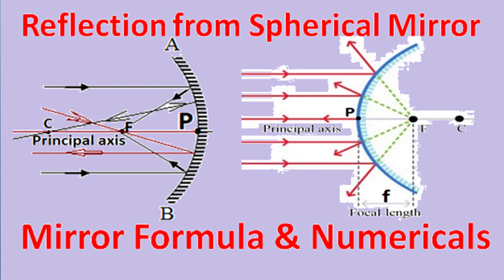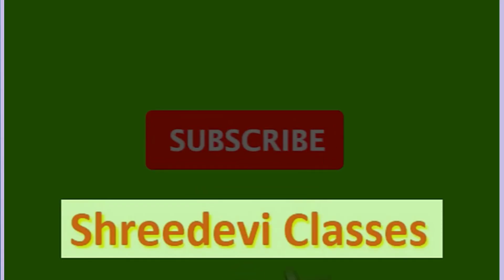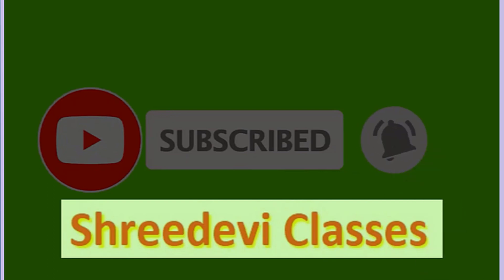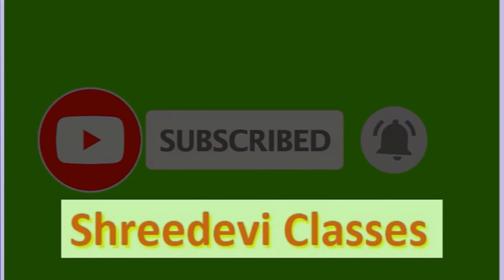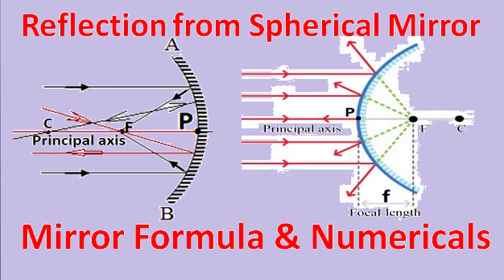We hope this learning video has explained every aspect of image formation in both concave and convex mirrors. You can now use the mirror formula and magnification formula for numerical calculations and apply the Cartesian sign convention correctly. Our other learning videos in the same playlist are equally useful. If you need exam-centric study notes or online doubt-clearing classes, do join our YouTube membership. Happy learning — thank you very much!